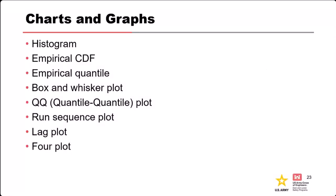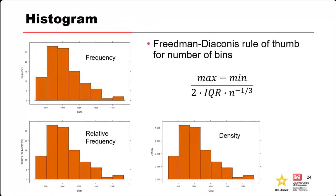There are many more plot types than we could cover, but here are the ones we'll highlight: histograms, empirical distribution functions, empirical quantile plots, box and whisker plots, quantile-quantile plots, run sequence plots, lag plots, and four-plots. You'll get to generate some of these in the exercise after this presentation. A histogram is just a visual representation of the frequencies we calculated earlier — it's the visual picture of frequencies.